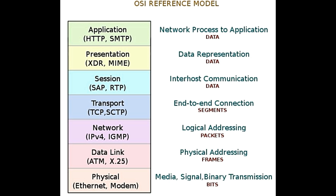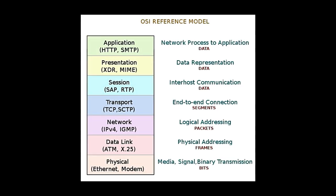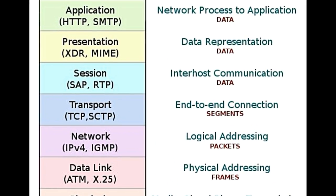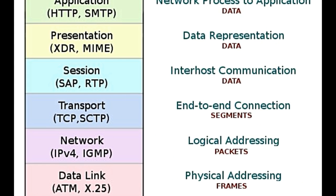Transport layer: It is responsible for delivering the data or messages between the two users. The first task is to divide the data into packets, which are further reassembled at the receiver's side. It is also responsible for error-free data transmission, and it guarantees that the data will be received in the correct sequence at the receiver end. UDP, SPX, TCP, etc. are some of the protocols that operate on this layer.